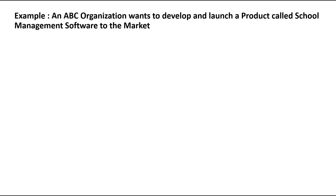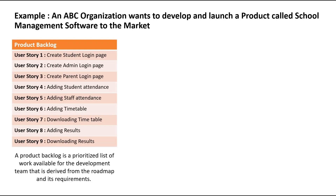Based on this plan, the Product Owner or Business Analyst will break down this high-level requirement into epics and further down to user stories. This list of user stories is called the Product Backlog. To define, a Product Backlog is a prioritized list of work available for the development team that is derived from the roadmap and its requirements.